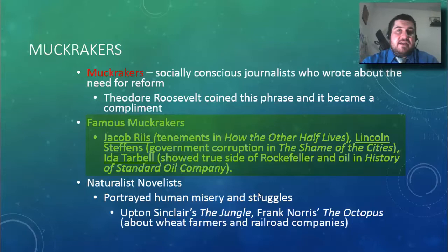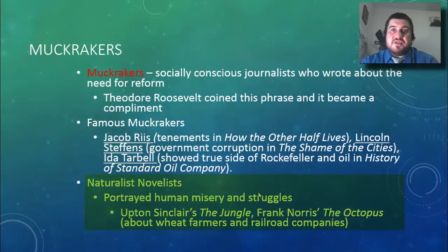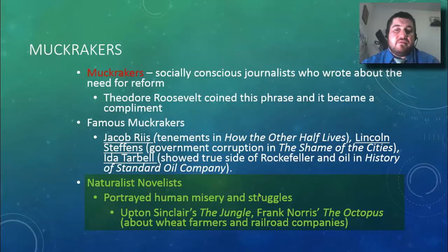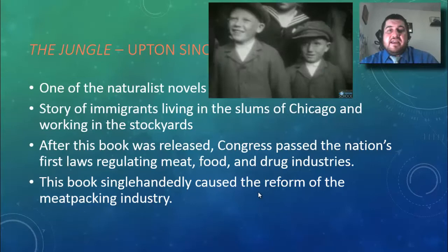There were also novelists who can be considered muckrakers — people who portray human misery and struggle in fictional form. Upton Sinclair's 'The Jungle' is the most famous. Frank Norris's 'The Octopus' is about wheat farmers and railroad companies in California. 'The Jungle' tells the story of immigrants living in the slums of Chicago and working in the meat stockyards.